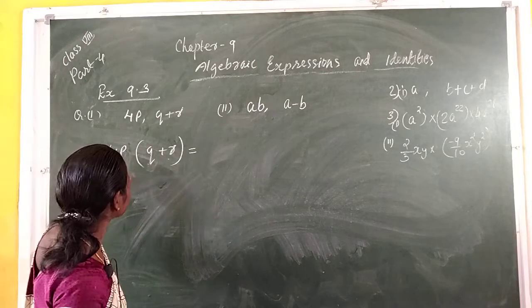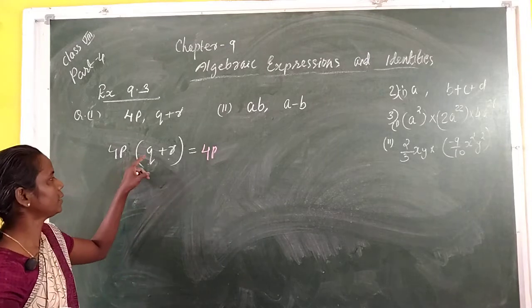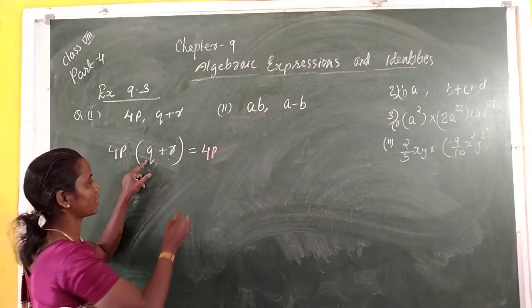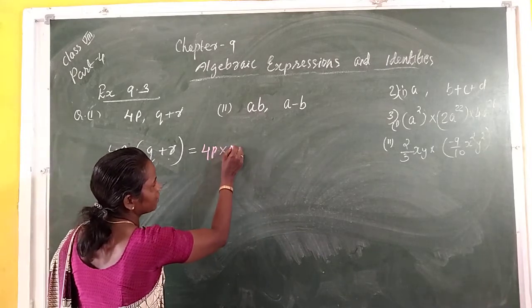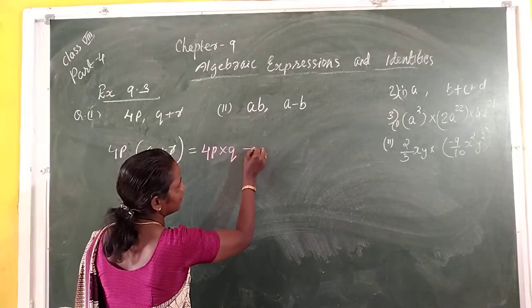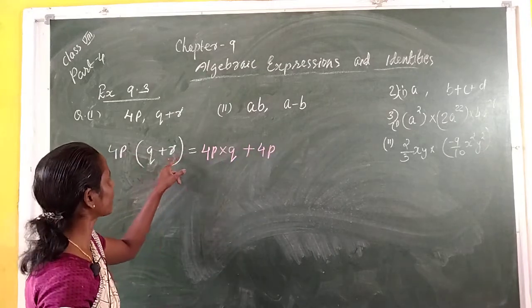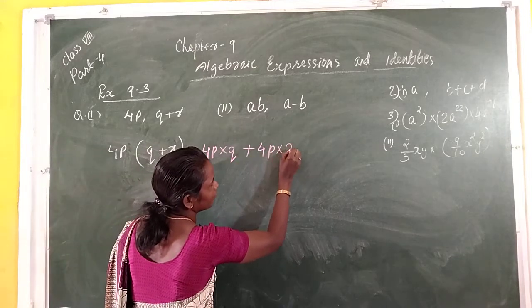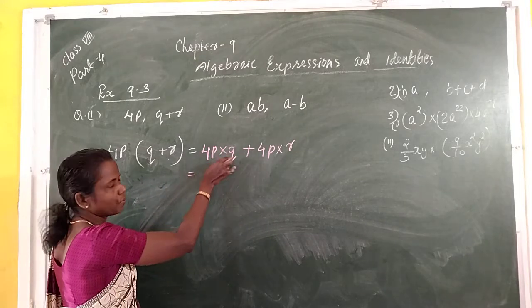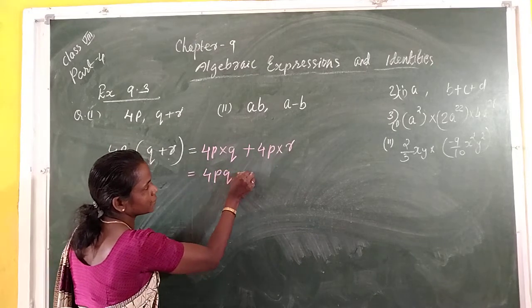So we write: 4P multiplied by Q, plus the sign is plus, then 4P multiplied by R. The answer is 4PQ plus 4PR.